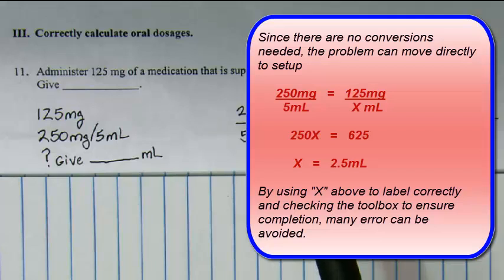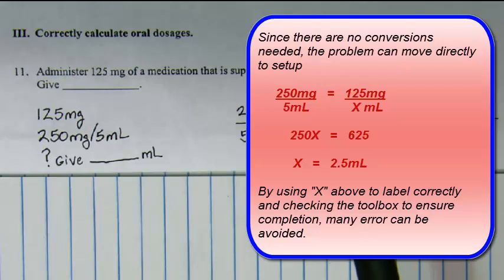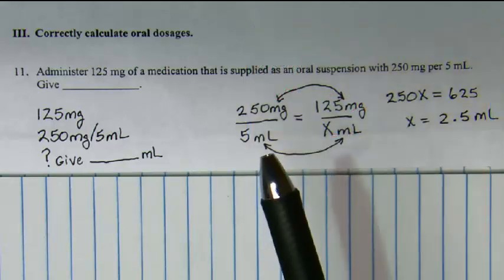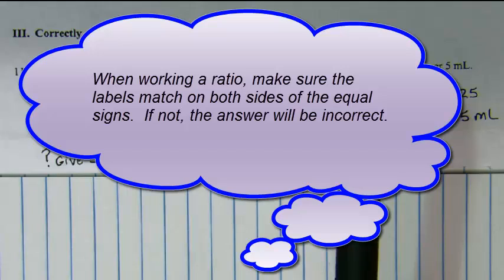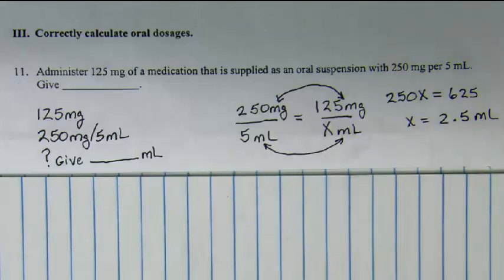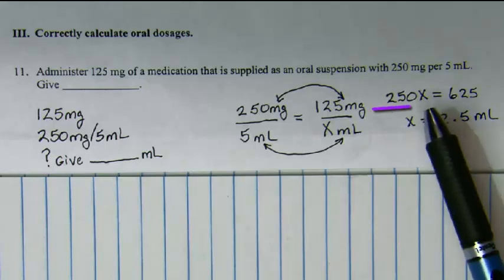The ratio and proportion is on the left-hand side: the supply, or what we have, which is 250 milligrams per 5 milliliters. On the right-hand side, the order for 125 milligrams over x milliliters. Notice milliliters matches milliliters and milligrams matches milligrams — in ratio and proportion problems, labels on both sides of the equal sign must match in order for the problem to work out.